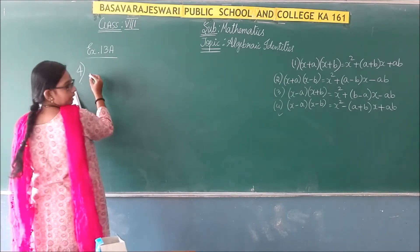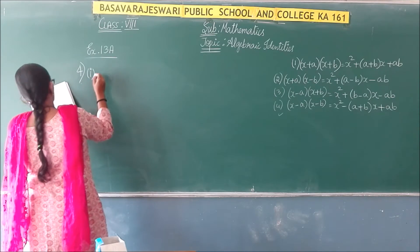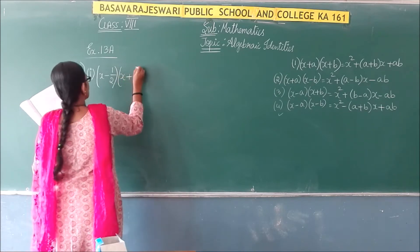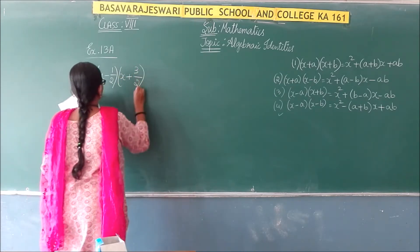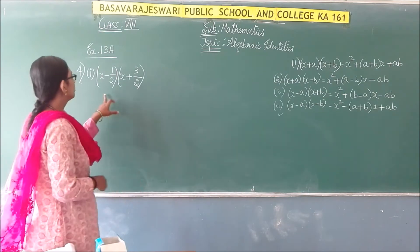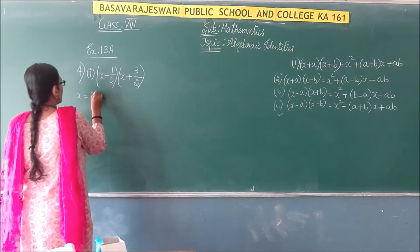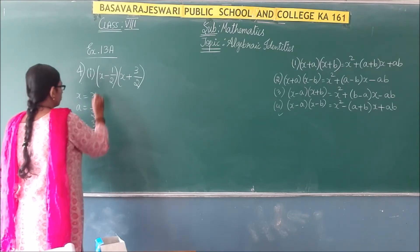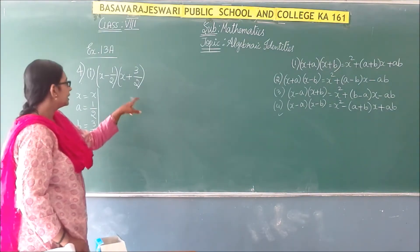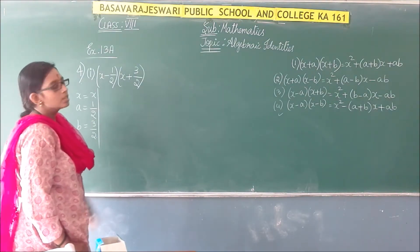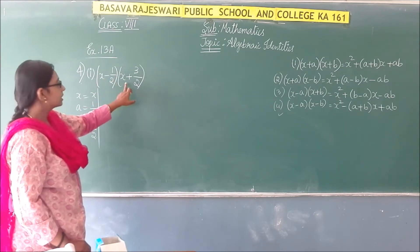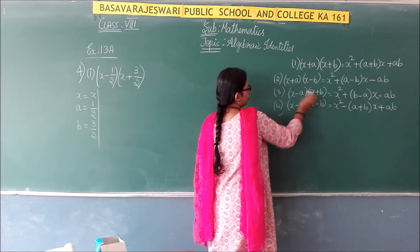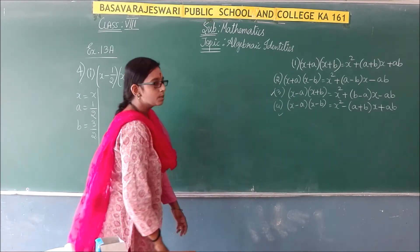Now in the fourth way, I am going to solve sub-problem: (x - 1/2)(x + 3/2). Here in place of x we have x, in place of a we have 1/2, and in place of b we have 3/2. In the first expression we have a negative sign, and in the second a positive sign, so we apply the third identity.